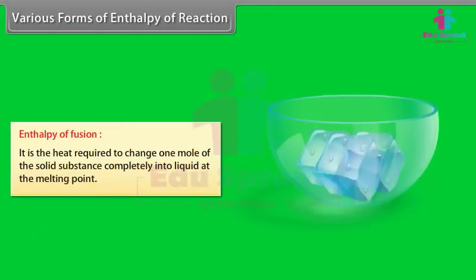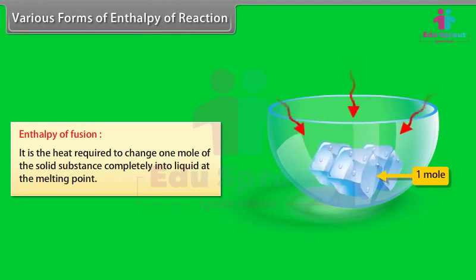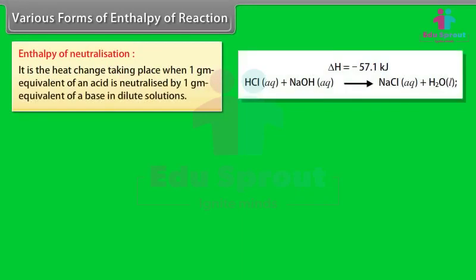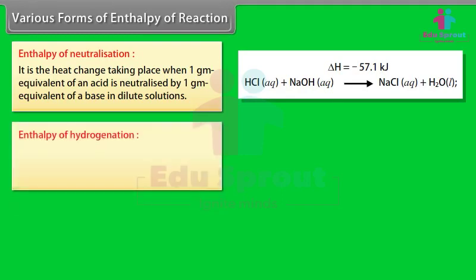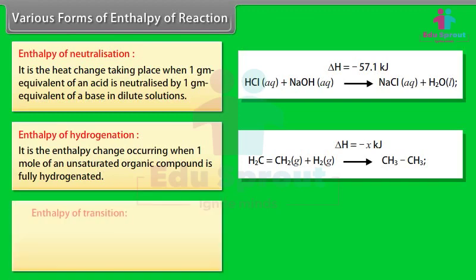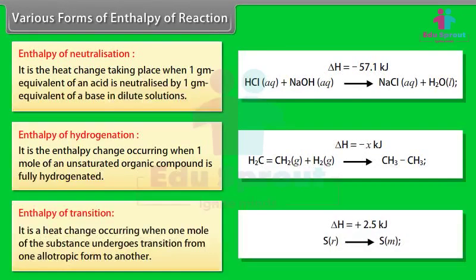Enthalpy of fusion: the heat required to change one mole of a solid substance completely into liquid at the melting point. Enthalpy of vaporization: the heat required to change one mole of a liquid substance completely into vapors at the boiling point. Enthalpy of neutralization: the heat change when one gram equivalent of an acid is neutralized by one gram equivalent of a base in dilute solutions. Enthalpy of hydrogenation: the enthalpy change when one mole of an unsaturated organic compound is fully hydrogenated. Enthalpy of transition: the heat change when one mole of a substance undergoes transition from one allotropic form to another.